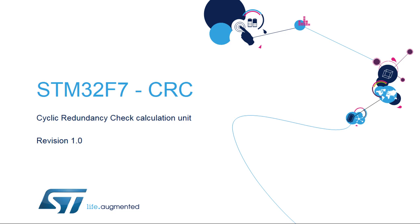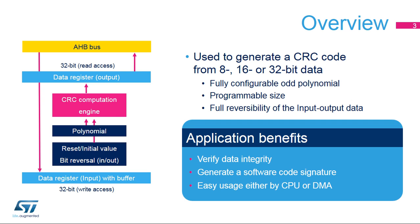Welcome to this presentation of the STM32 Cyclic Redundancy Check Calculation Unit. It covers all the features of this unit, which generates a code to detect errors. CRC stands for Cyclic Redundancy Check. The CRC calculation unit is used to generate a CRC code on 8, 16, or 32 bits of data using a configurable polynomial value and size.